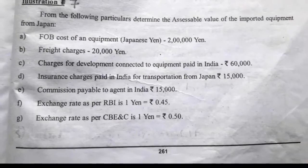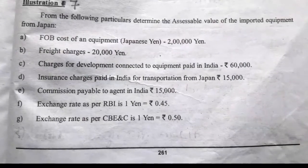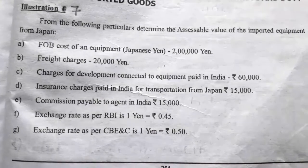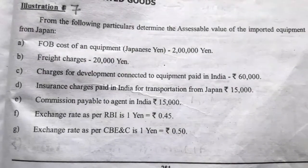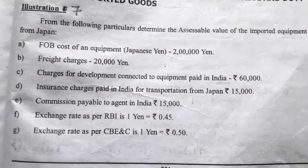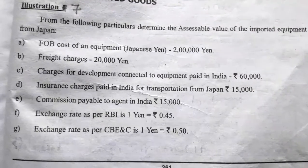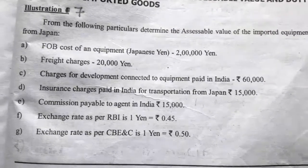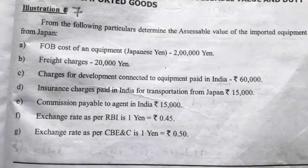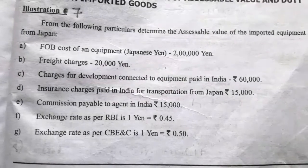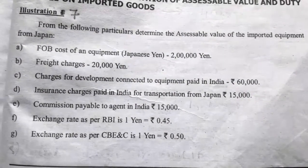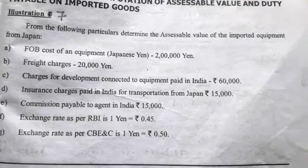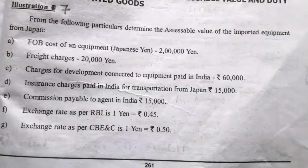The given data: FOB cost of equipment is Japanese Yen 2,00,000; freight charges 20,000 Yen; charges for development connected to equipment paid in India Rs. 60,000; insurance charges paid in India for transportation from Japan Rs. 15,000; commission payable to agent in India Rs. 15,000. Exchange rate as per RBA is 1 Yen = Rs. 0.45, and exchange rate as per CBEC is 1 Yen = Rs. 0.50. With this information we have to compute the assessable value.